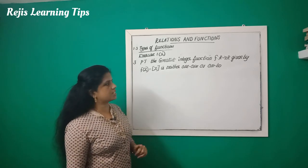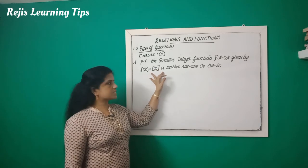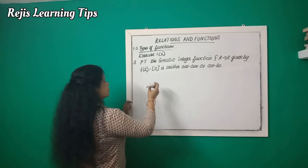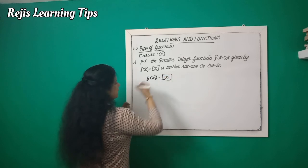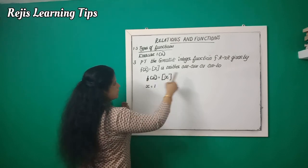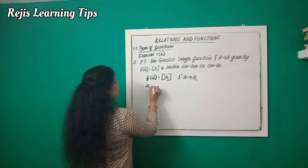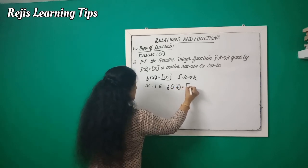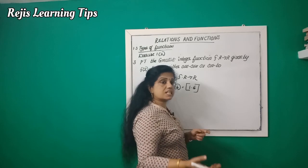Prove that the greatest integer function f, such that R to R given by f(x) = ⌊x⌋, is neither one-one nor onto. The greatest integer function f(x) = ⌊x⌋ means the greatest integer less than or equal to x.